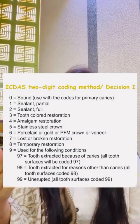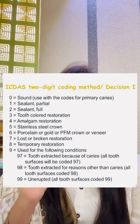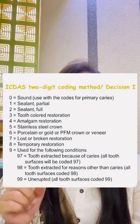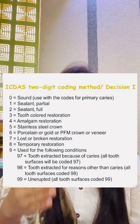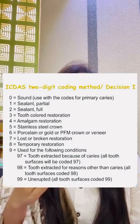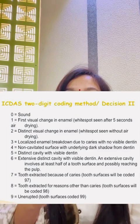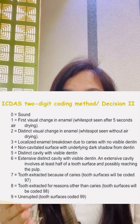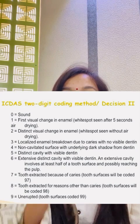The first decision represents the digit X — you can read the scores for the first decision in the table shown. The second decision is Y, which represents lesion assessment. You can read in the table what each score of decision Y means.